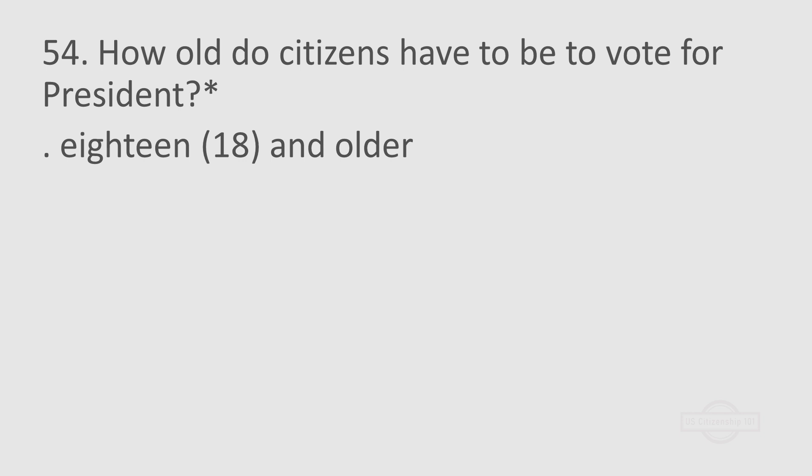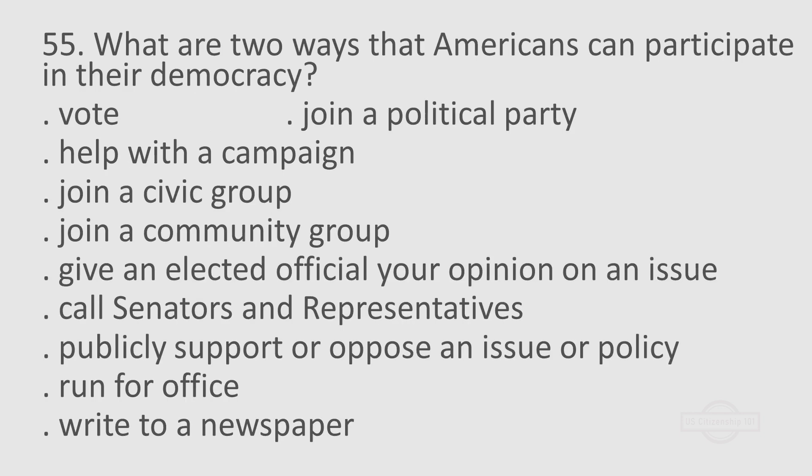Question 54: How old do citizens have to be to vote for president? 18 and older. Question 55: What are two ways that Americans can participate in their democracy? Vote. Join a political party. Help with a campaign. Join a civic group. Join a community group. Give an elected official your opinion on an issue. Call senators and representatives. Publicly support or oppose an issue or policy. Run for office. Write to a newspaper.